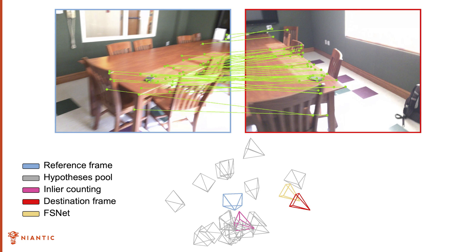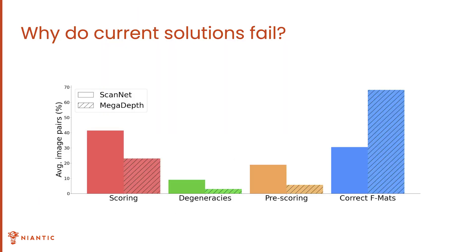But first, what's the reason behind RANSAC failures? Let's analyze it in more detail. In this plot, we show the statistics of state-of-the-art RANSAC successes and failures for pairs of images in ScanNet and MegaDepth. RANSAC fails when correct correspondences are degenerate, for example, when they can be explained with a homography.